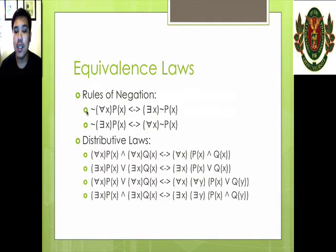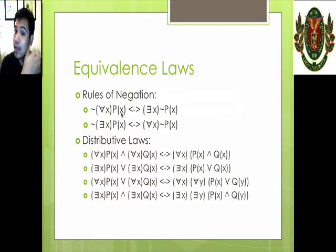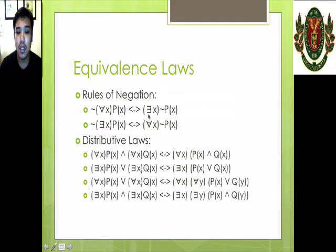The first one is called the rules of negation. So when there is a universal quantifier and a predicate after that, and the negation is outside of the grouping, then if you want to put it inside the quantifier, then the universal quantifier should become the opposite — an existential quantifier — and then we can negate the predicate inside it.